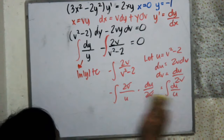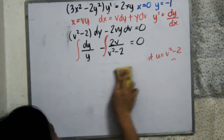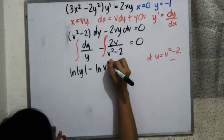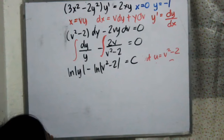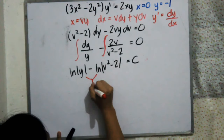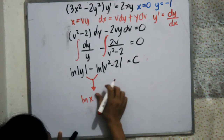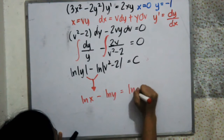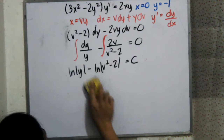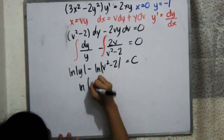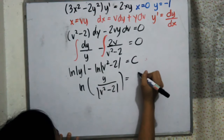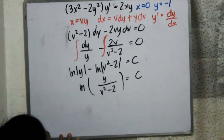Now we rewrite the integration result in a cleaner form. Using the natural logarithm rule that ln x minus ln y equals ln(x over y), we combine to get ln of y over v squared minus 2, all equal to C.